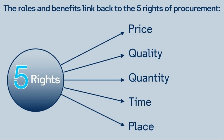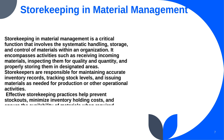The right price involves negotiating favorable terms to achieve cost efficiency without compromising quality. Right source entails selecting reliable suppliers capable of delivering materials consistently and meeting contractual obligations. Right time emphasizes the timely acquisition of materials to support production schedules and prevent delays. Finally, the right quantity ensures that procurement aligns with demand forecasts and inventory requirements, minimizing excess inventory or stockouts. Adhering to these five Rs helps optimize the purchasing process, reduce costs, and maintain seamless operations.